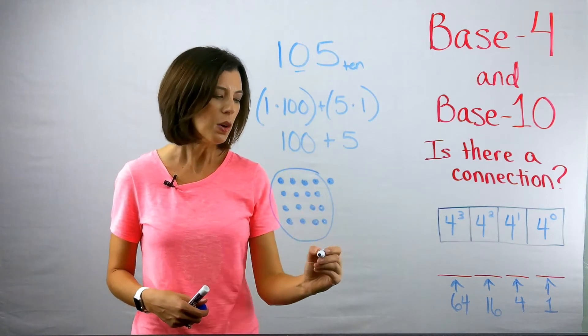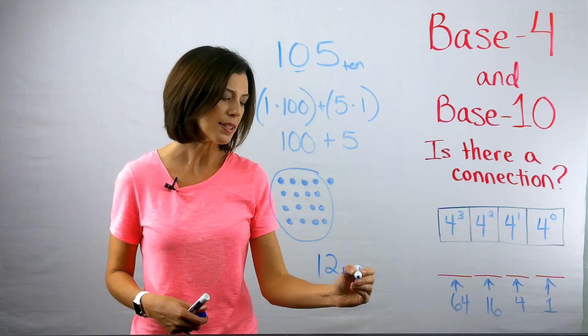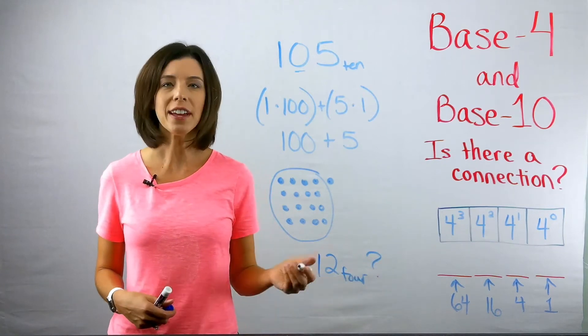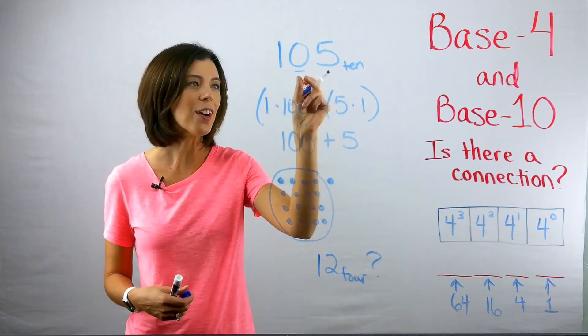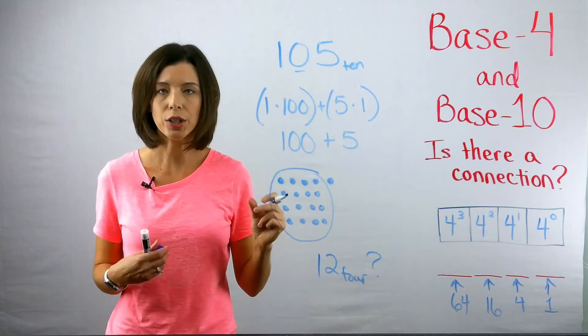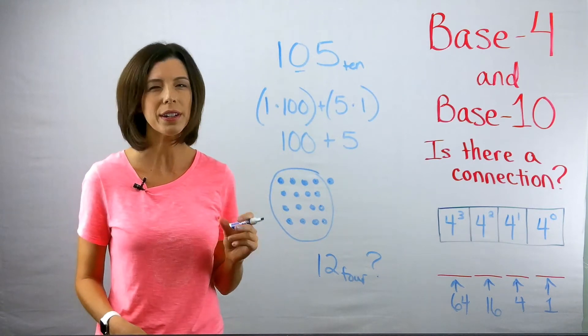Because some people might think, well, is this one, two, base four? And to figure that out, we really need to take into account what the zero actually represents. So this is where it gets a little bit tricky.